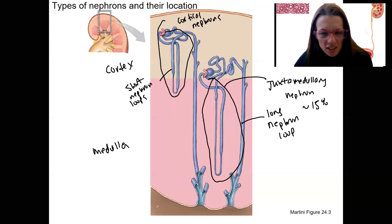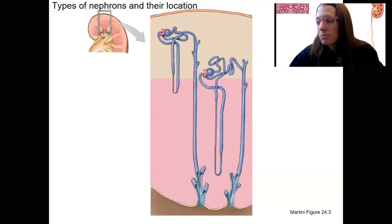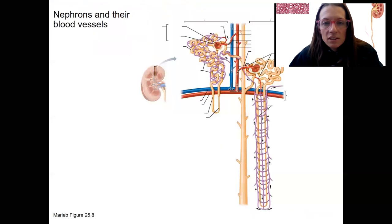Down here, this is a calyx. Okay, along with the different nephrons, there's different blood vessels that surround each of these. So this is going back to those terms, the peritubular capillaries versus the vasa recta. So let's look at that.